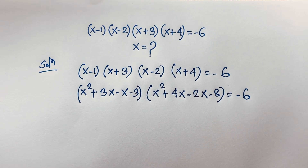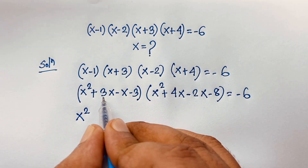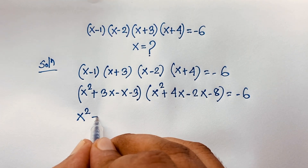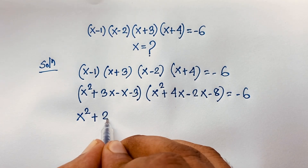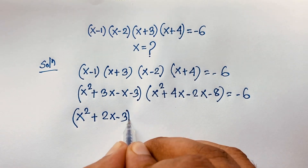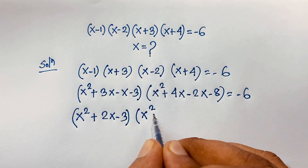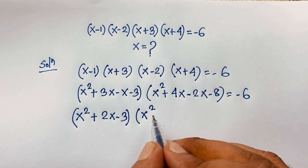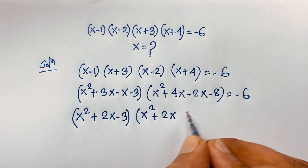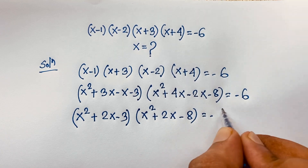Simplifying the first bracket: x squared plus 3x minus x gives x squared plus 2x, minus 3. Simplifying the second bracket: x squared plus 4x minus 2x gives x squared plus 2x, minus 8. So we have (x² + 2x − 3)(x² + 2x − 8) = negative 6.